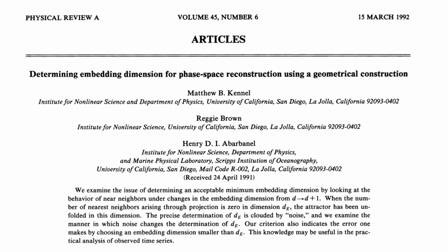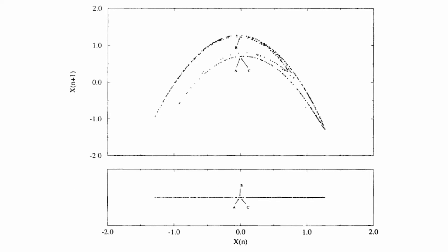It adds dimensions to the embedding, that is, it increases m, until false crossings stop occurring. Or as we'll see later, there's not very many false crossings. It does this by defining something called a false neighbor.